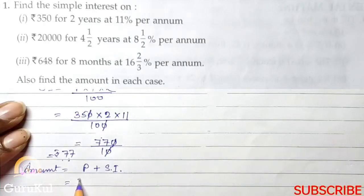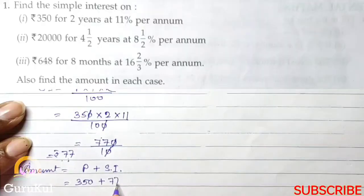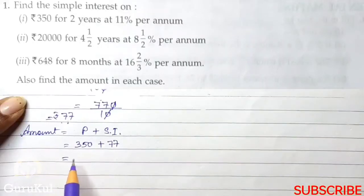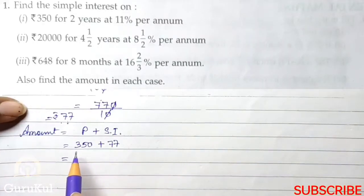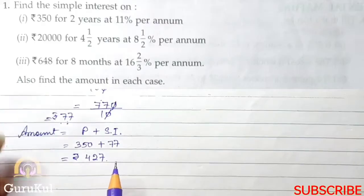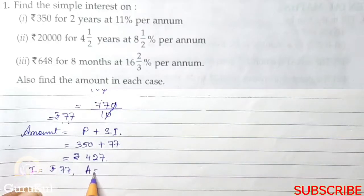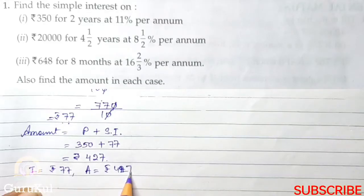So principle we know, it is 350 plus interest we have evaluated, which is 77. Hence, adding these two we get the answer rupees 427. So interest is rupees 77 and amount is rupees 427.